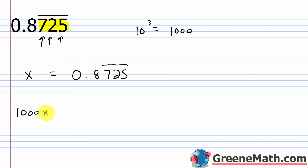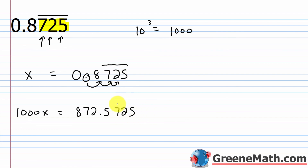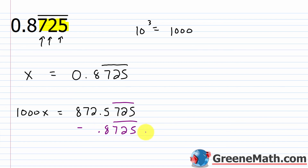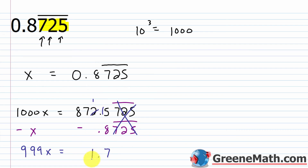So 1000x equals — moving the decimal three places to the right — 872.5725... with the 725 repeating forever, shown with a bar. Now subtract the original equation from both sides: on the right subtract 0.8725 with a bar over the 7, 2, and 5, and subtract x on the left. The repeating part cancels; borrowing gives 15 minus 8 equals 7, then the decimal point, then bringing down 1, 7, 7, and 8. On the left, 1000x minus x gives 999x.